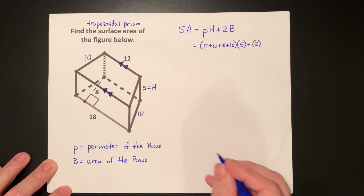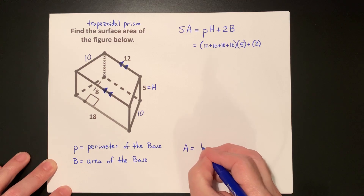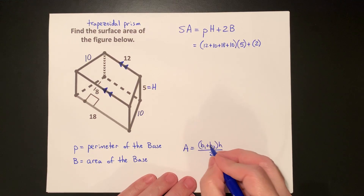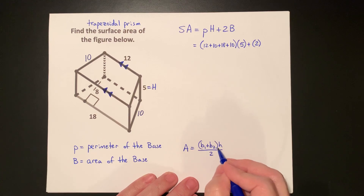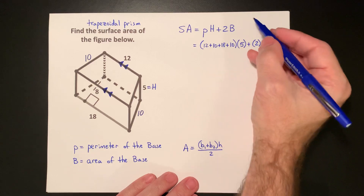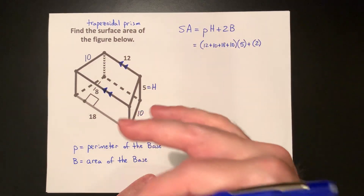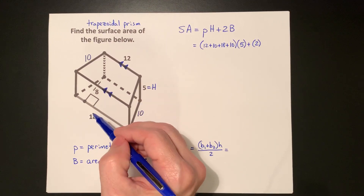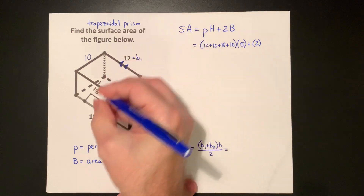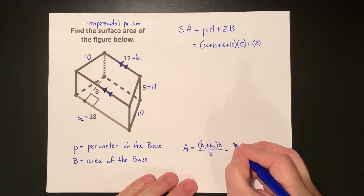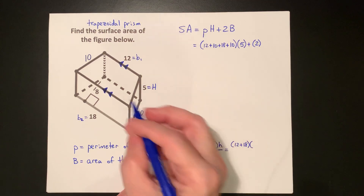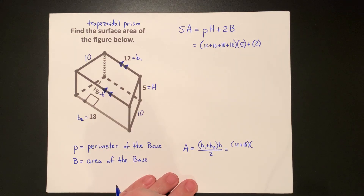The area of the base, since it's a trapezoid, will be base 1 plus base 2 times the height divided by 2. Note that I'm using small b's and small h's here to represent the dimensions of a two-dimensional shape, whereas capital H and capital B are for the three-dimensional shape. Base 1 is 12, which makes base 2 equal to 18. The height — the distance between the bases of the trapezoid — is 8, identified by the right angle. So we have 12 plus 18, times 8, divided by 2.